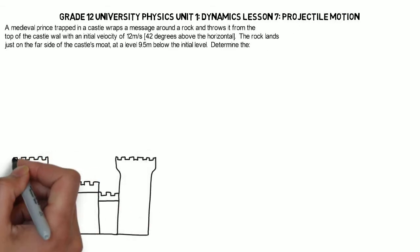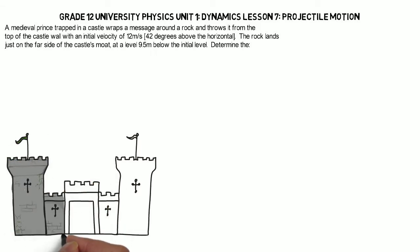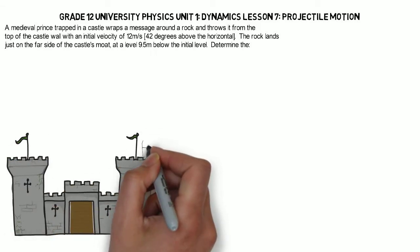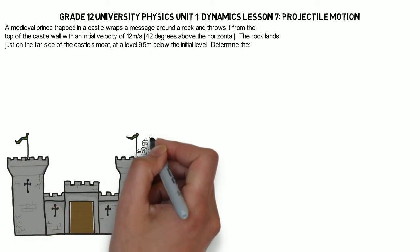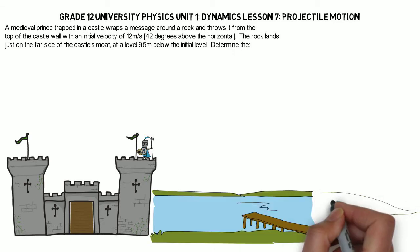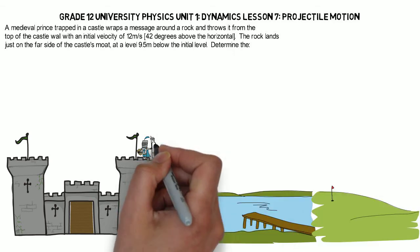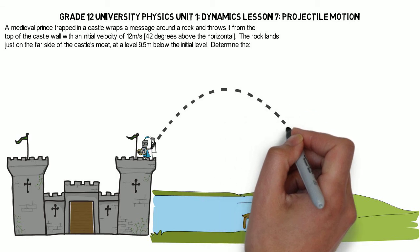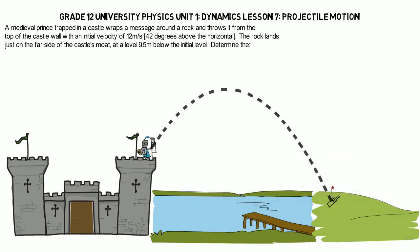A medieval prince trapped in a castle wraps a message around a rock and throws it from the top of the castle wall with an initial velocity of 12 meters per second, 42 degrees above the horizontal. The rock lands just on the far side of the castle's moat, at a level 9.5 meters below the initial level.